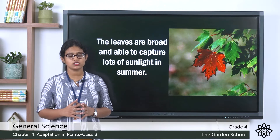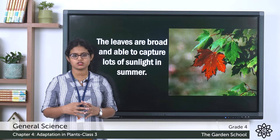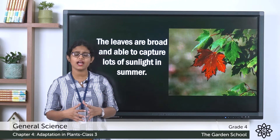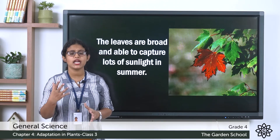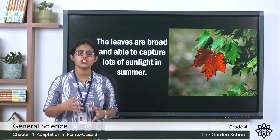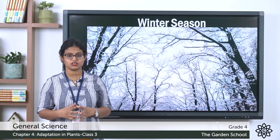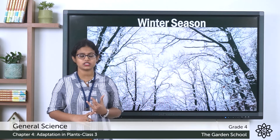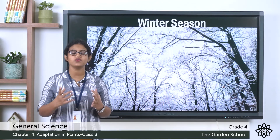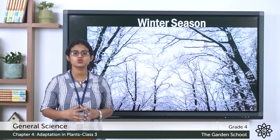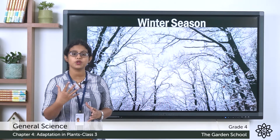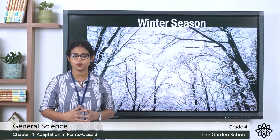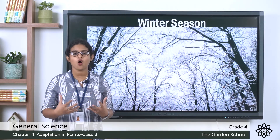The next feature is that the trees have broad leaves. If you closely observe the picture, you can see they have large broad leaves. They have broad leaves in order to capture lots of sunlight during summer. During winter, the trees shed their leaves to survive and to prevent loss of water, since plants lose water through their leaves. During spring, the leaves grow back, marking the onset of summer.